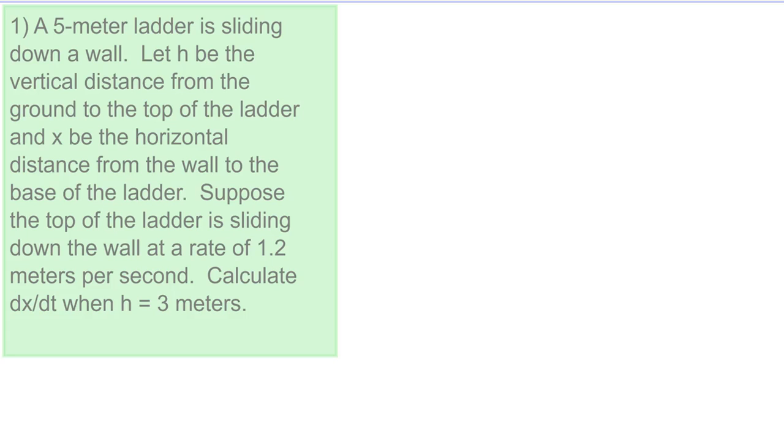Okay, a five meter ladder is sliding down a wall. So I'm going to go ahead and draw a picture. We have the ground, we have the wall, we have the ladder, it's a fixed length of five. We have a right angle. Let h be the vertical distance from the ground to the top of the ladder, so that's h, and let x be the horizontal distance from the wall to the base of the ladder, so that's x.